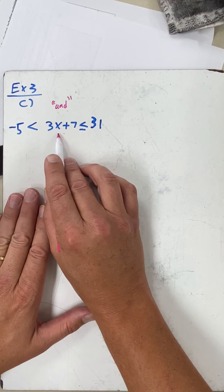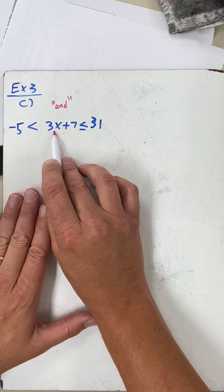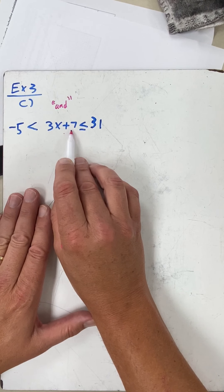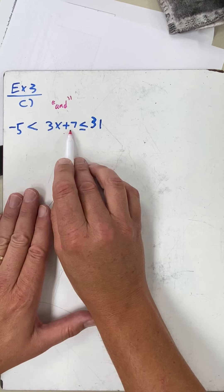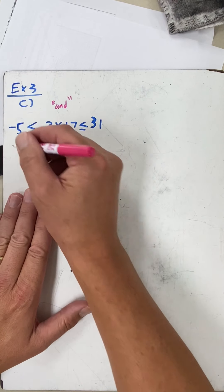So our goal is still to get x by itself. As I look at this, I'm going to do—okay, what's the opposite of multiplying by three? Dividing by three. What's the opposite of adding seven? Subtracting seven. But when I do it, I do it to the left, the middle, and the right, wherever the inequalities are.